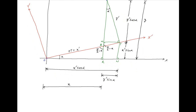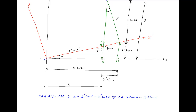From the chart above we note that the sum of the horizontal distances OR and RN is equal to ON. Therefore X plus Y' sin alpha is equal to X' cos alpha, which implies that X is equal to X' cos alpha minus Y' sin alpha.